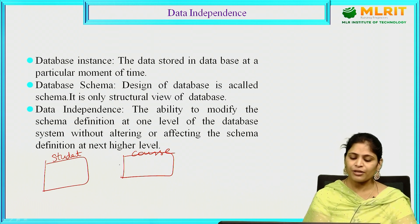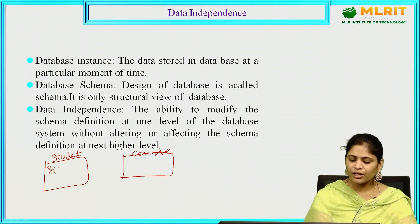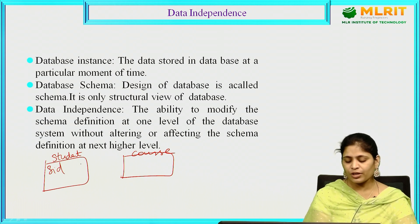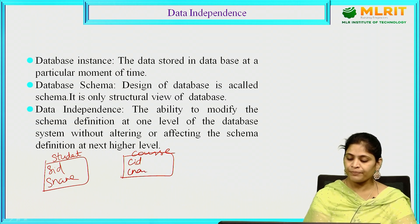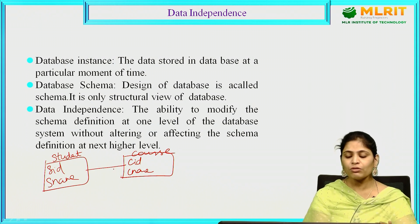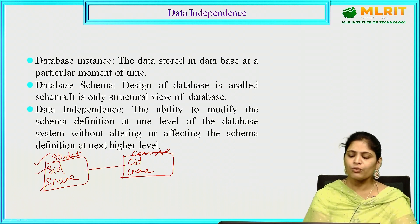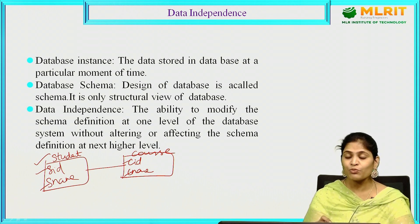Designing a database includes, for example, storing student data and course data. In student data we represent student ID and student name; in course data we represent course ID and course name. We relate these two entities. So in the student database, the student entity contains its attributes and the course entity contains its attributes, which are interrelated with each other. This small design is what we call a schema — the design of a database.